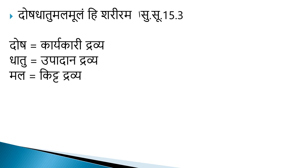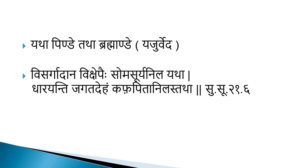So our body is basically composed of these three main entities — Dosh, Dhatu and Mal. These are the three main pillars of our body. Here we are focusing on the Dosh.